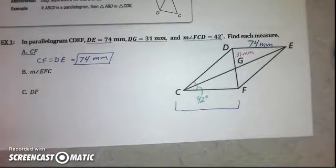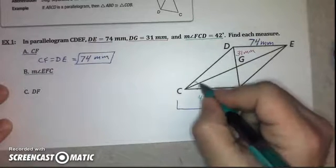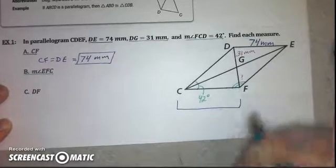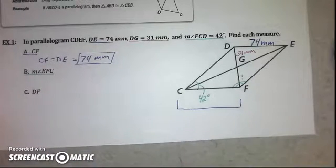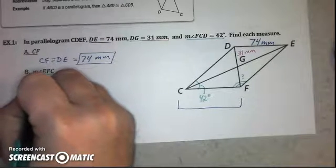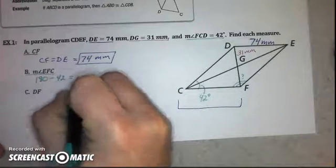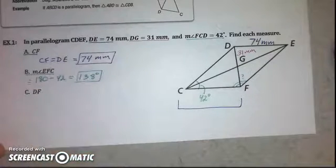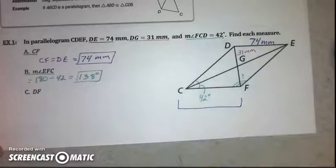Next, we're going to find the measure of angle EFC. We're told angle DCF is 42 degrees, and angle EFC is the angle we're looking for. These are consecutive angles in a parallelogram, and the property states that consecutive angles are supplementary. So we do 180 minus 42 degrees, which gives us 138 degrees for the measure of angle EFC — because they must be supplementary.